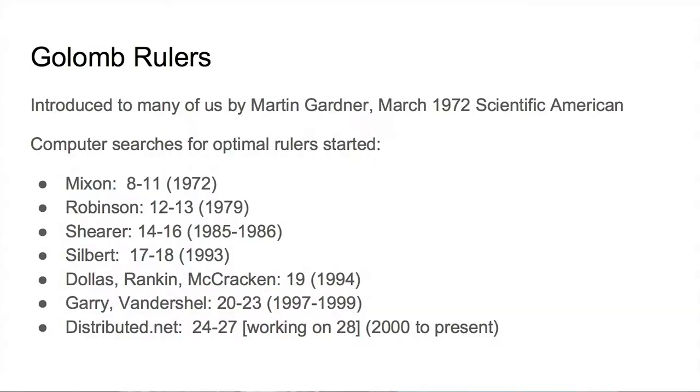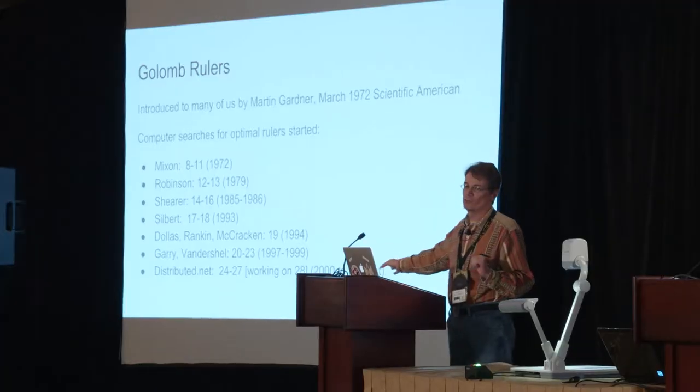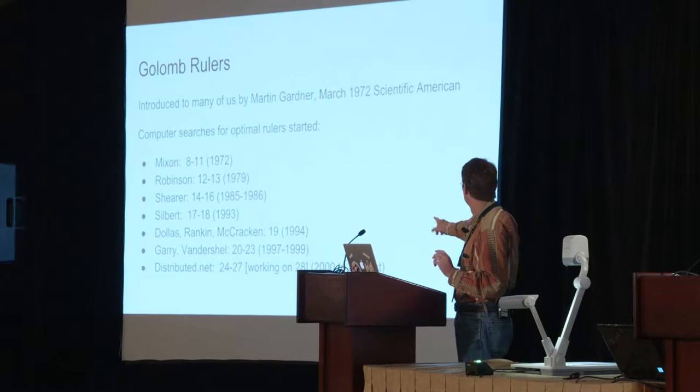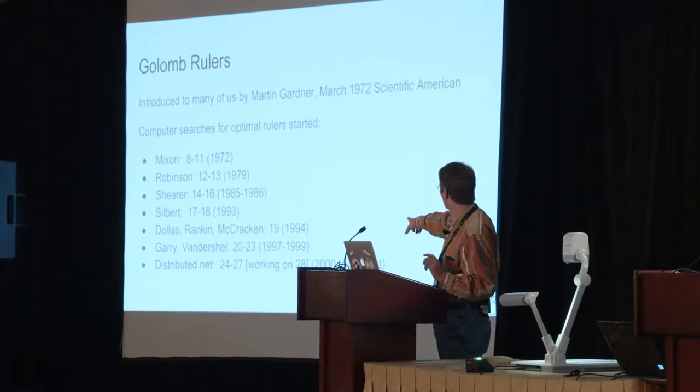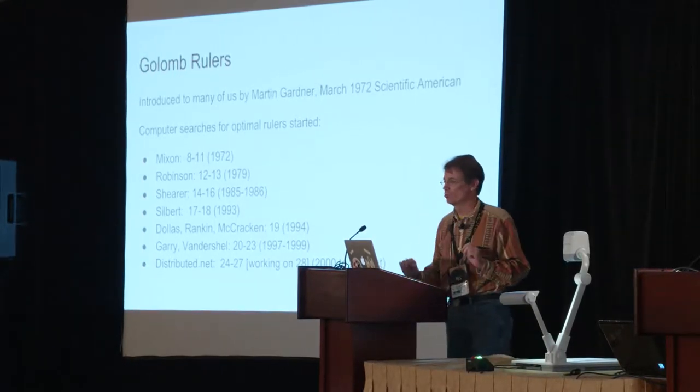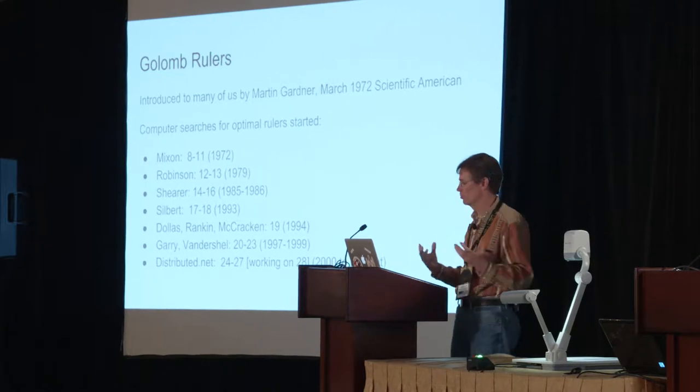So a bunch of people started writing programs to explore what the optimal ruler space looks like — what's the shortest ruler we can come up with? There's a sequence of contributors: Mixon did some early results, then Robinson, James Sherrod, IBM, Silberg, et cetera, and it just expanded. Right now there are thousands of computers working on this problem across the world in a distributed .NET project. They're working right now on the 28-mark ruler, trying to find the shortest ruler with 28 marks.